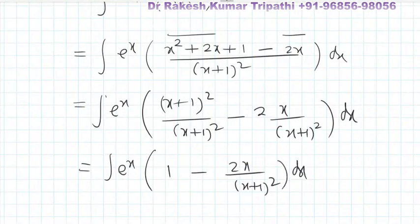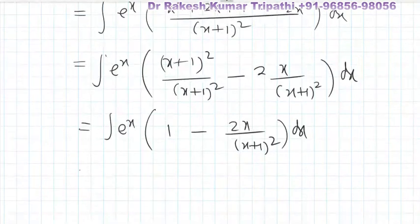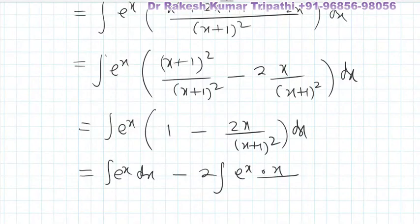Now we shall separate the integrals. On separating, we find the integral of e to the power x dx, minus 2 taken common, times the integral of e to the power x into x upon (x plus 1) whole square dx.